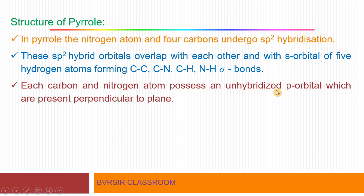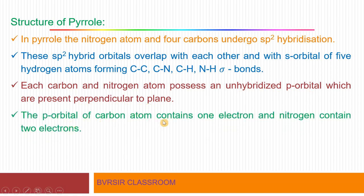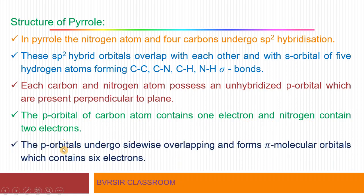Each carbon and nitrogen atom possesses an unhybridized P orbital which is present perpendicular to the plane. Let us verify this structurally. The P orbital of each carbon atom contains one electron, while the nitrogen atom's P orbital contains two electrons.